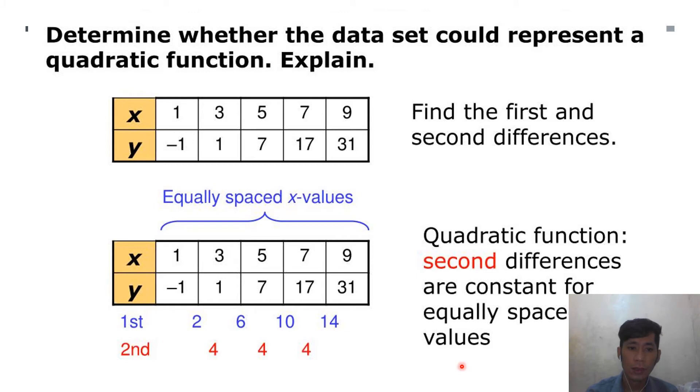Let us have another example. So let's determine if this table of values represents quadratic function. So the first one, we're going to find first the first difference. So 31 minus 7, that is 14. 17 minus 7, 10. 7 minus 1, 6. 1 minus negative 1 is positive 2. Then after finding the first difference, find the second difference. 14 minus 10, 4. 10 minus 6, 4. 6 minus 2, 4. So dahil pare-parehas po yung second difference natin, meaning, this table of values represents quadratic function. Is it clear, class? Very good.